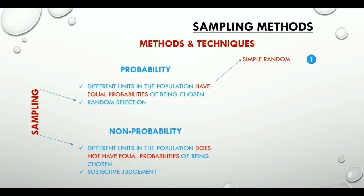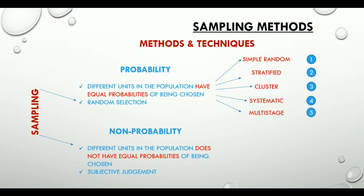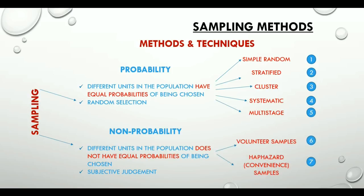Probability sampling techniques could be simple random, stratified, cluster, systematic, and multi-stage. Non-probability sampling are primarily of two types: volunteer and haphazard, also called convenience sampling.